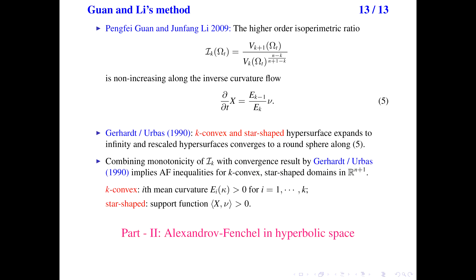Now we have described the curvature flow method to prove the classical Alexandrov-Fenchel inequalities in Euclidean space. In the next part, I will describe the analogous results for domains and hypersurfaces in hyperbolic space. This concludes part one of my talk.